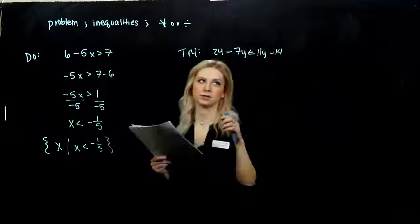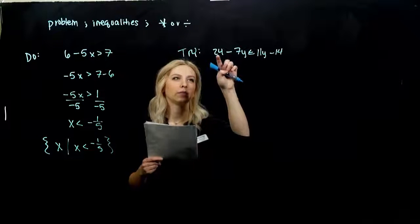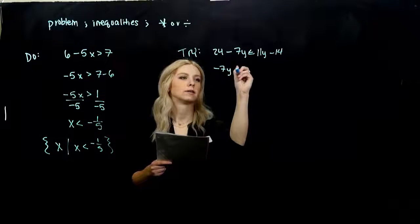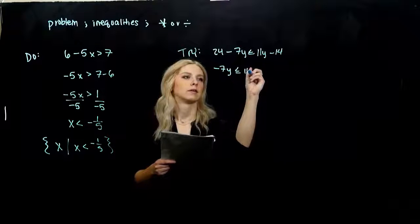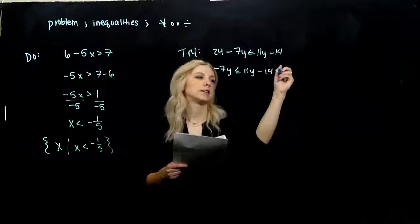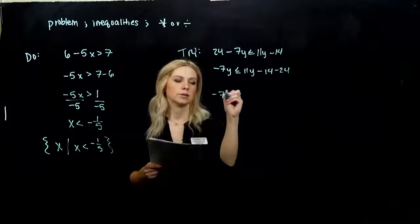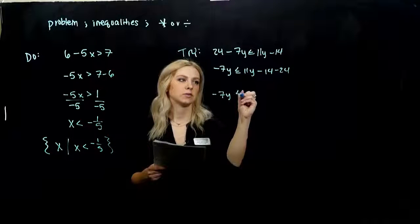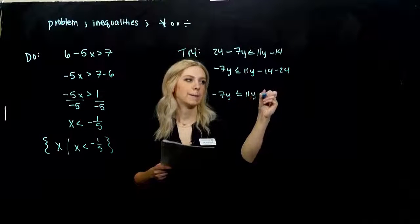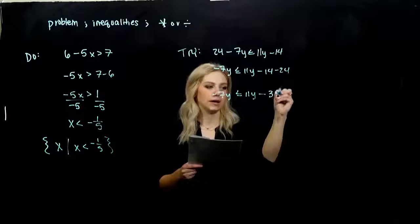So what did you move first? I like to get my y's together. I'm going to move this constant 24 to the other side. So when I subtract from both sides, I'm looking at minus 7y, less than or equal to 11y minus 38.